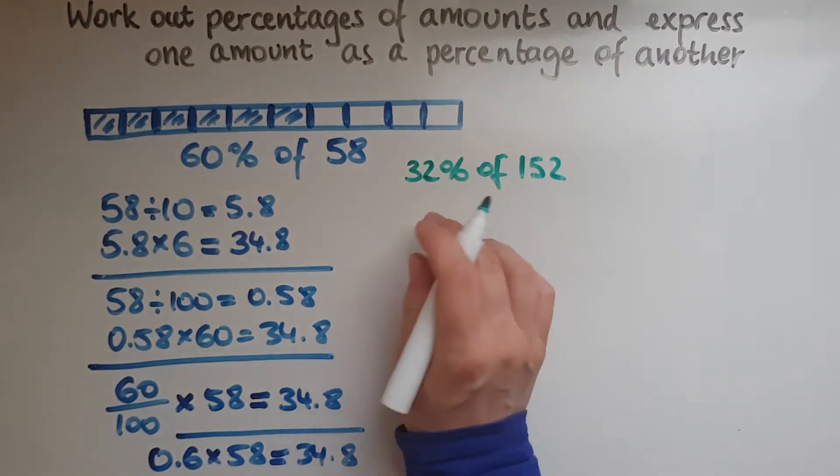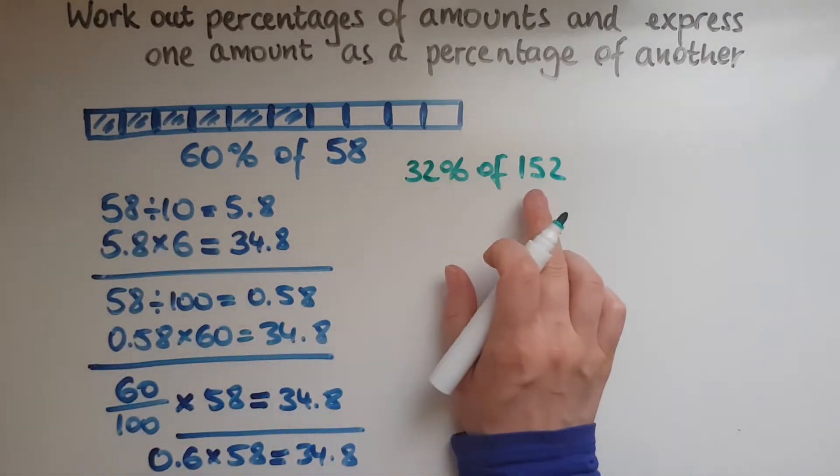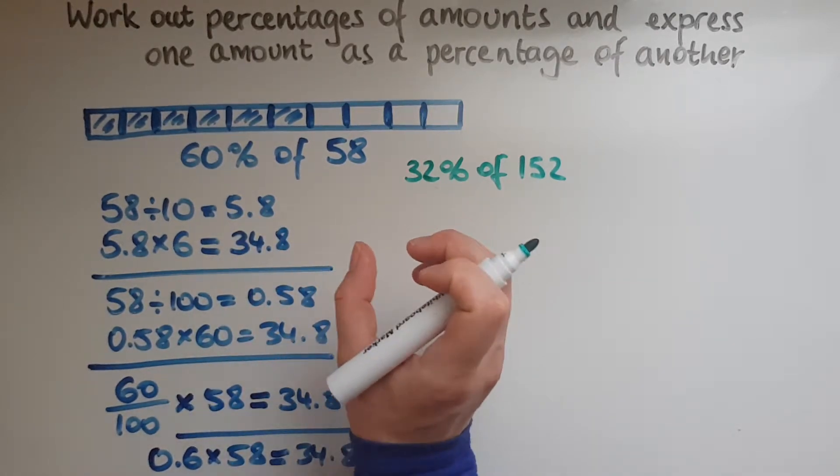So again, 32%. Let's follow this method. So we said we divided by 10 first, we find 10%.